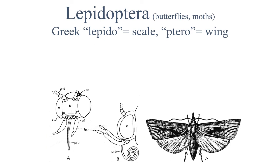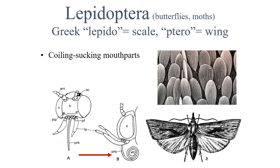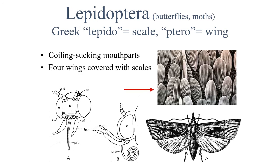Finally we have the Lepidoptera, which are butterflies and moths. As adults they have coiling, sucking mouth parts, but as we discussed earlier, the larvae or caterpillars have chewing mouth parts. They have four wings that are covered in tiny microscopic scales. This is the last group we're talking about today, but we have three more workshops that talk in detail about Coleoptera or beetles, Lepidoptera — butterflies and moths — and Hemiptera, the true bugs. So thanks, we'll be right back.